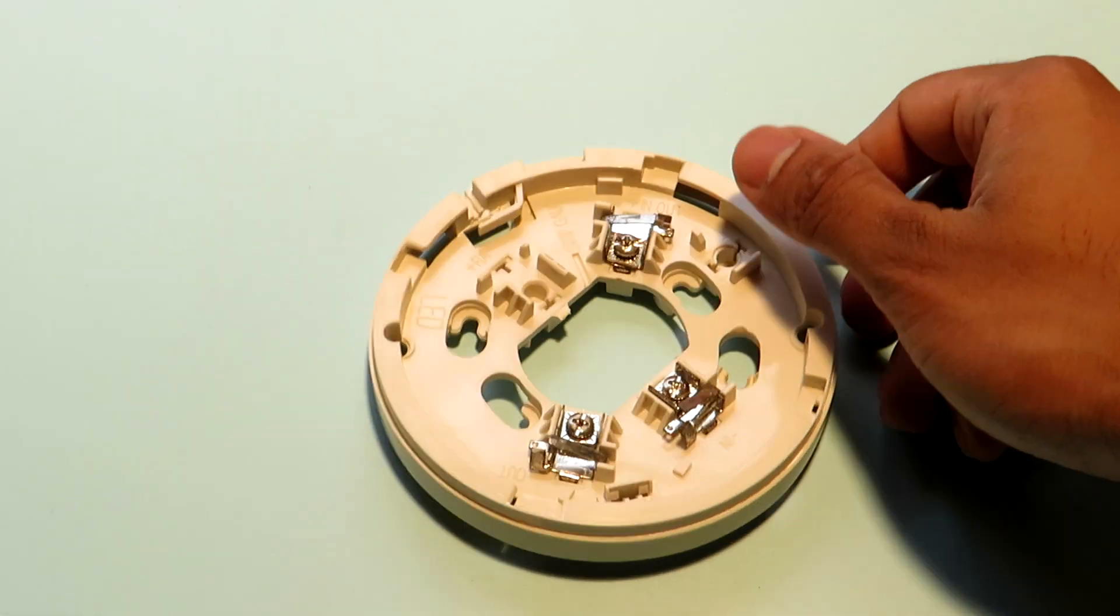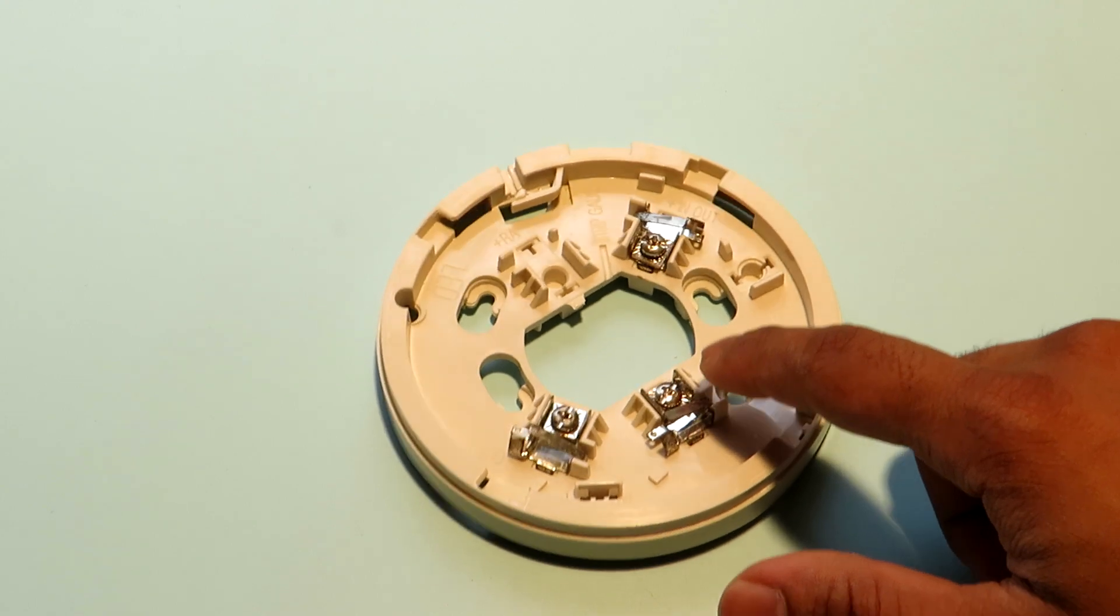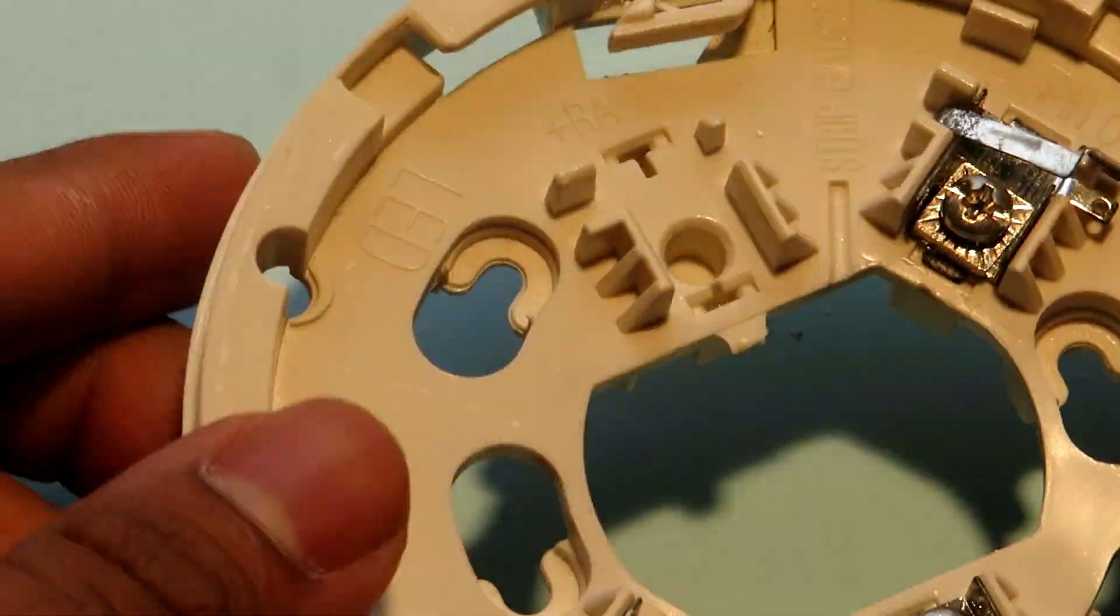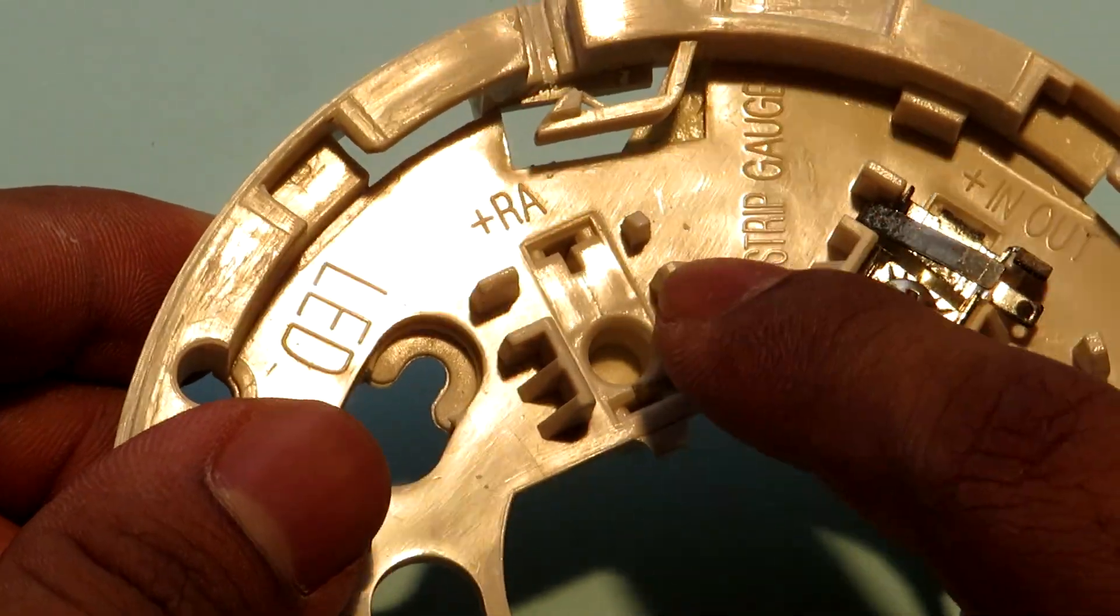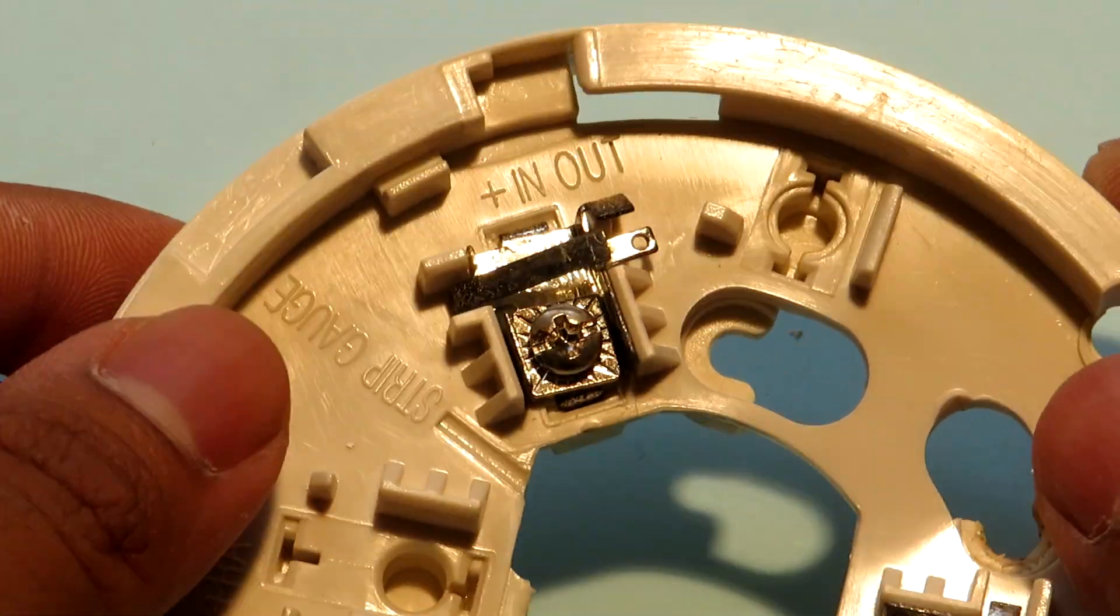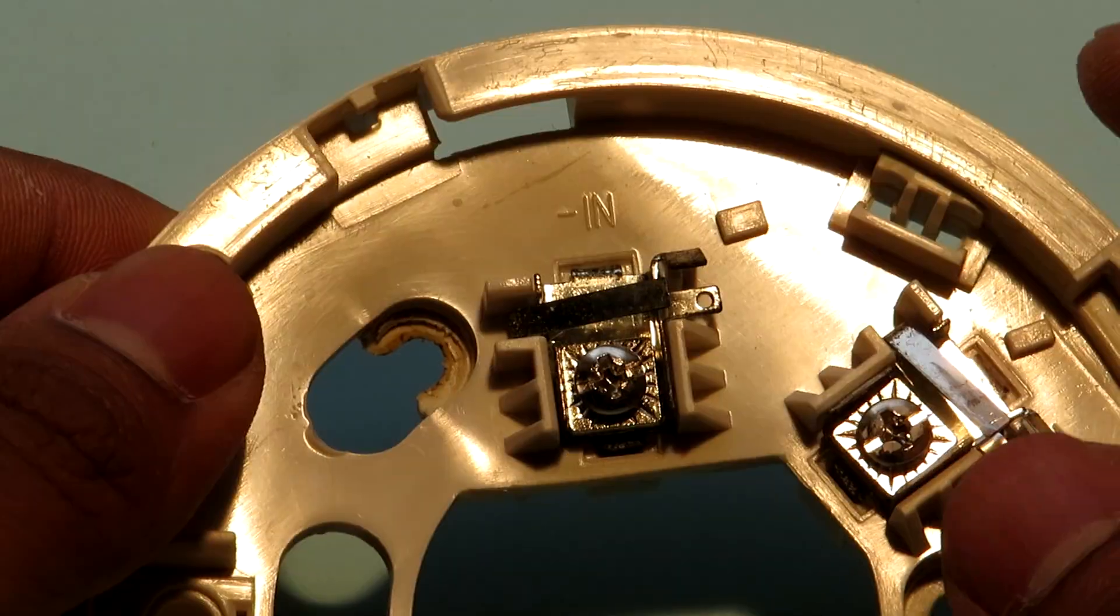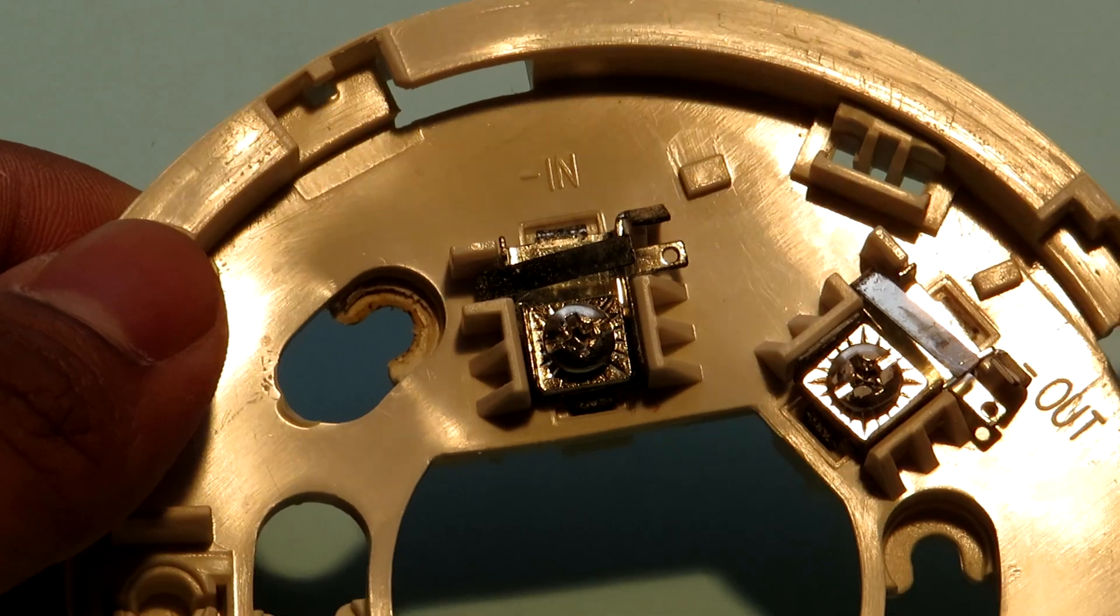Now here you can see something very similar to what we saw in the schematic earlier. There are three terminals and they do whatever was explained in the schematic. There is a provision for a fourth terminal here which has plus RA and LED written over there but there is no terminal. That is given for an auxiliary remote LED in the line. However, our detector does not support that so it has been blanked off by the manufacturer.